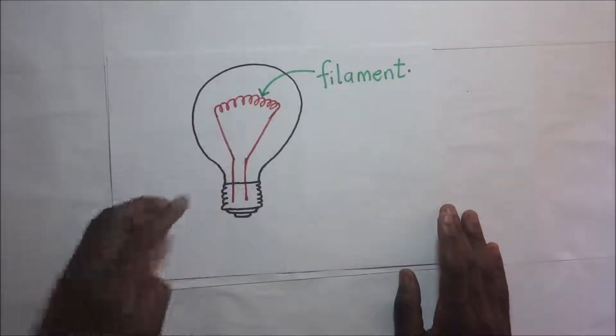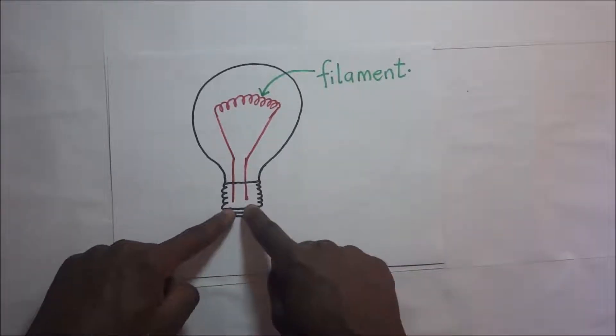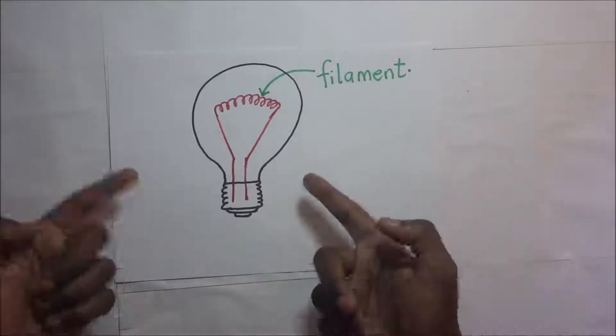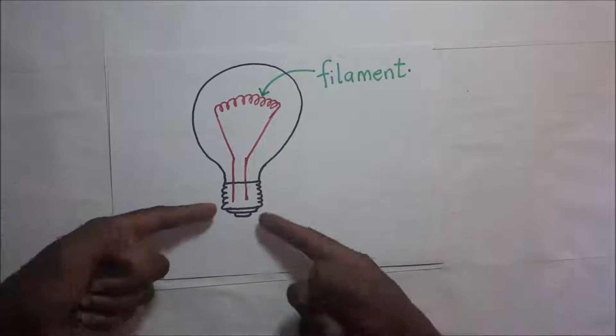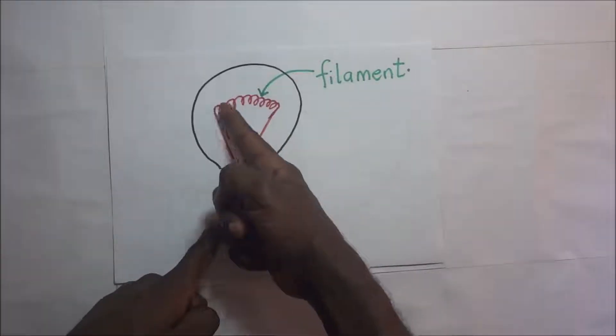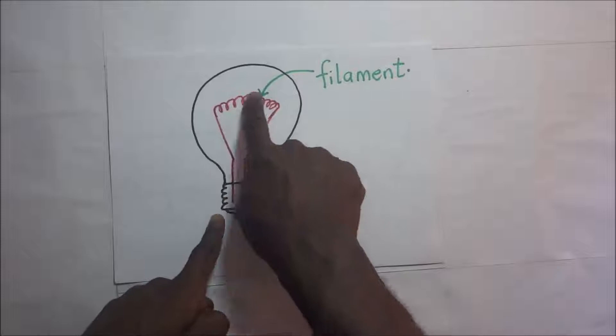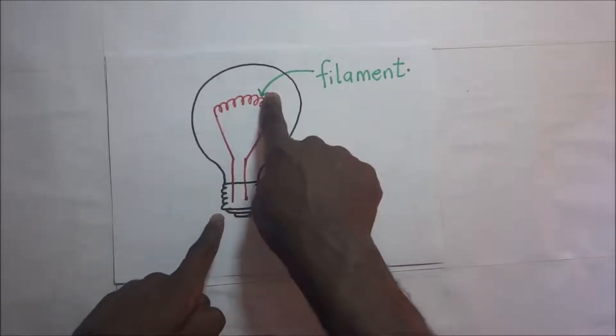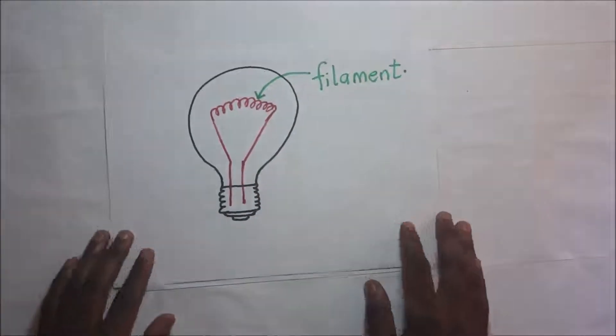Now how is this filament able to produce light? Well, when this is connected to a circuit, current gets in and when the current gets into this bulb, it heats it up. When this filament heats up, it glows.